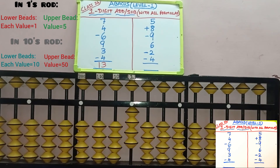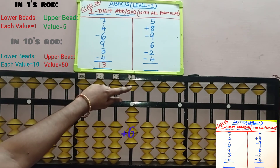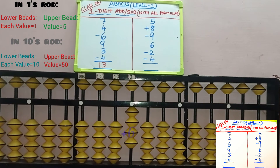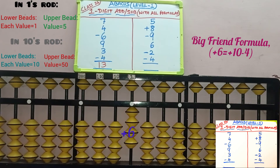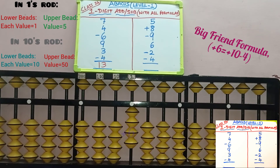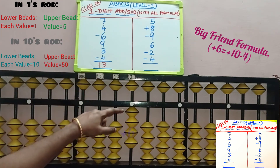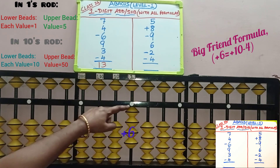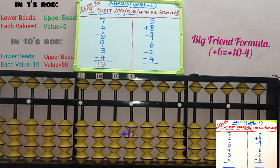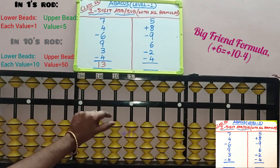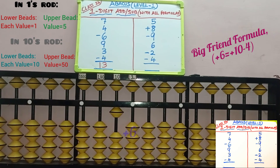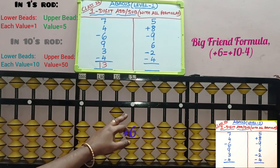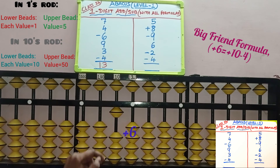Fourth row, plus 6 — we need to add 6 beads in the 1 slot. Only 5 beads are available, so direct addition is not possible. Check big friend: 6's big friend is 4. In plus 6, we have to remove 4 here — do minus 4. While removing the friend, add the boss in the 10's place: plus 10. 6 is added in the 1 slot with plus 10 minus 4.